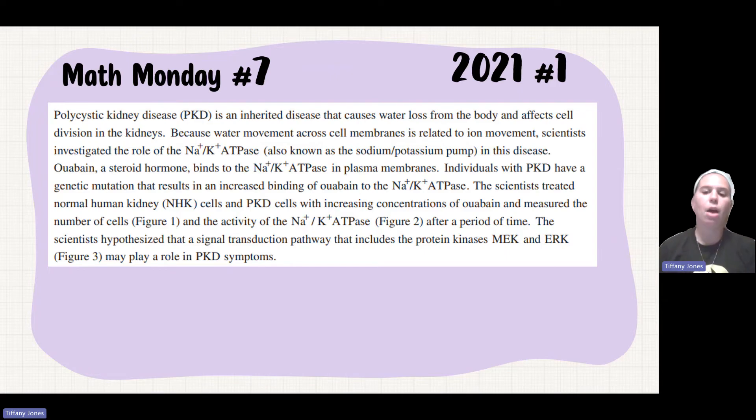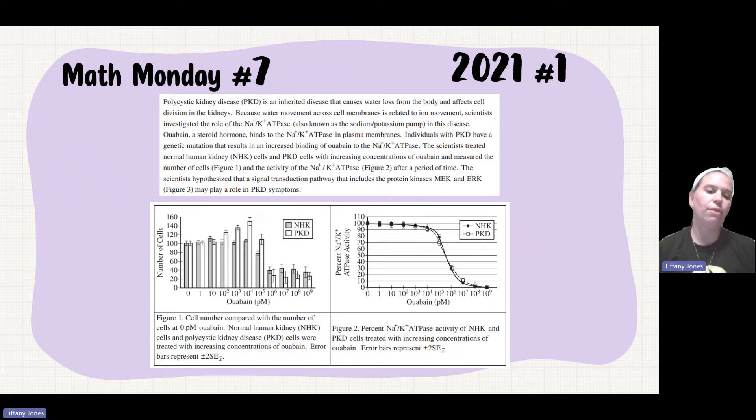And so they wanted to see how concentrations of a certain chemical affect that signaling pathway. They then also give you a data table showing you the number of cells versus the concentrations and then the percent of the sodium potassium pump in respect to those same concentrations.